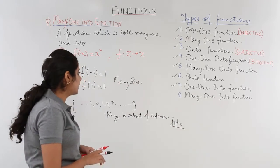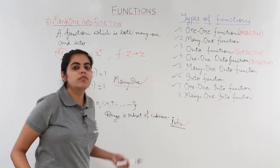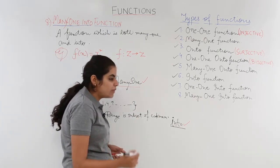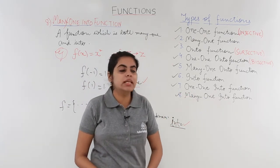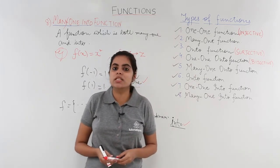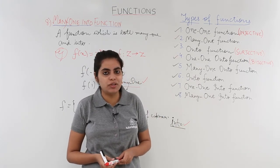Now, combining both these things—that it is many-one and into—we have it as a many-one into function, which is written here. And I put the tick mark, completing all the types of functions. So in this video, we completed the last type of function called many-one into function.